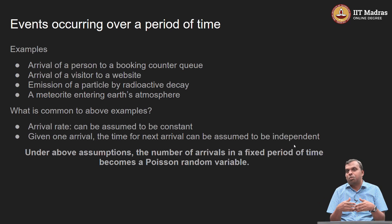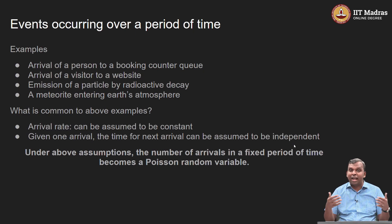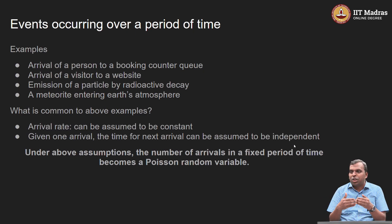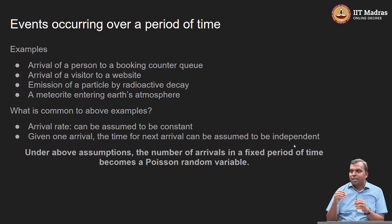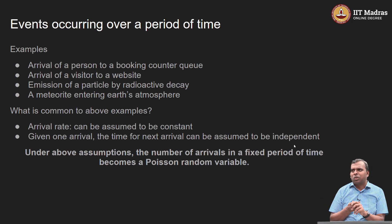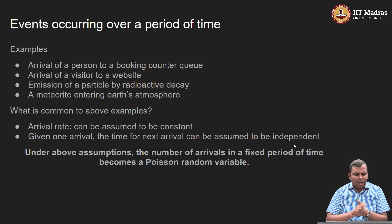Let us say you have a booking counter, like in a movie theater, a railway booking counter, or a bank teller waiting for a queue. Any place where you have to queue up and you want to say something about queue length — how the queue builds up when people come. This arrival of a person into a queue, wherever that queue is, is sort of like a random occurrence. We do not know ahead of time when exactly somebody is going to walk into the queue, and this setting shows up in so many places.